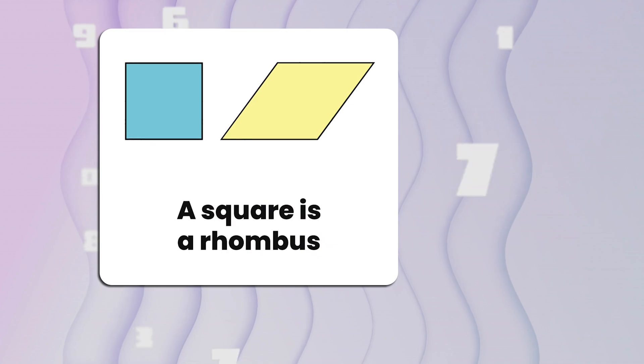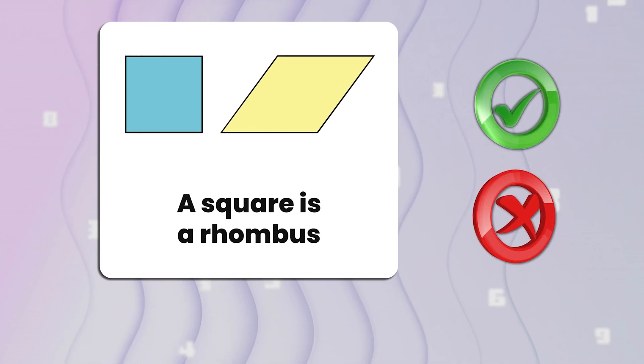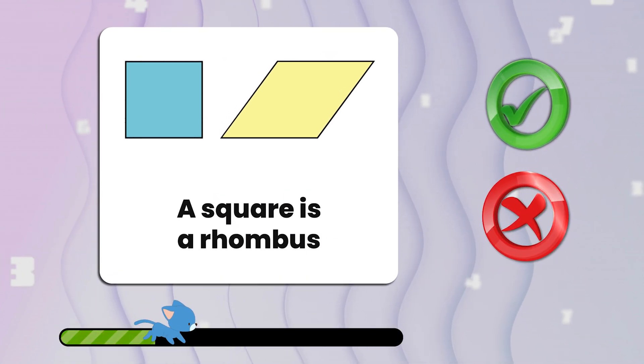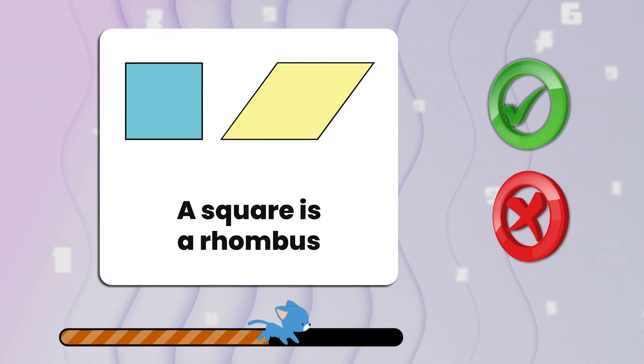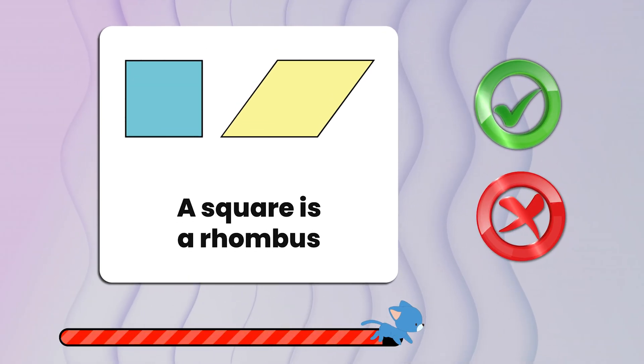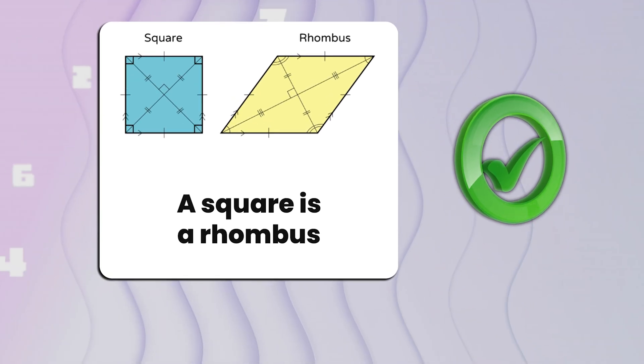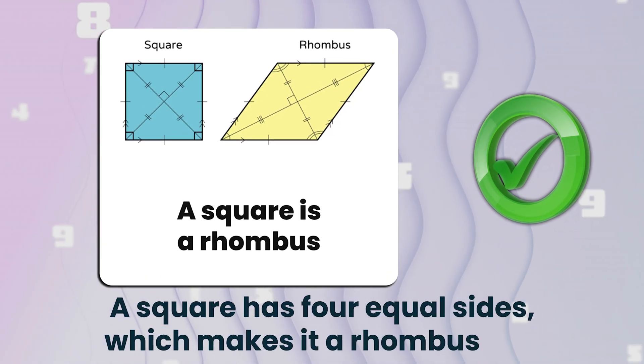Number nine. A square is a rhombus. True or false? That's true. A square has four equal sides, which makes it a rhombus too.